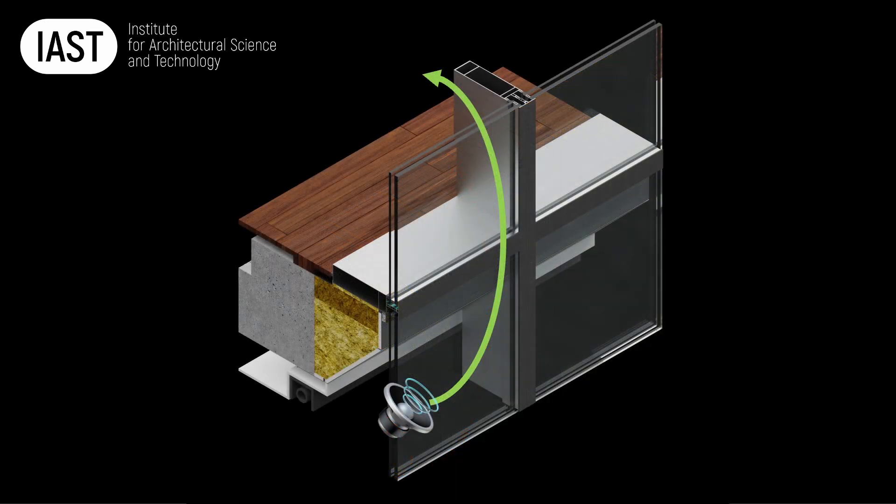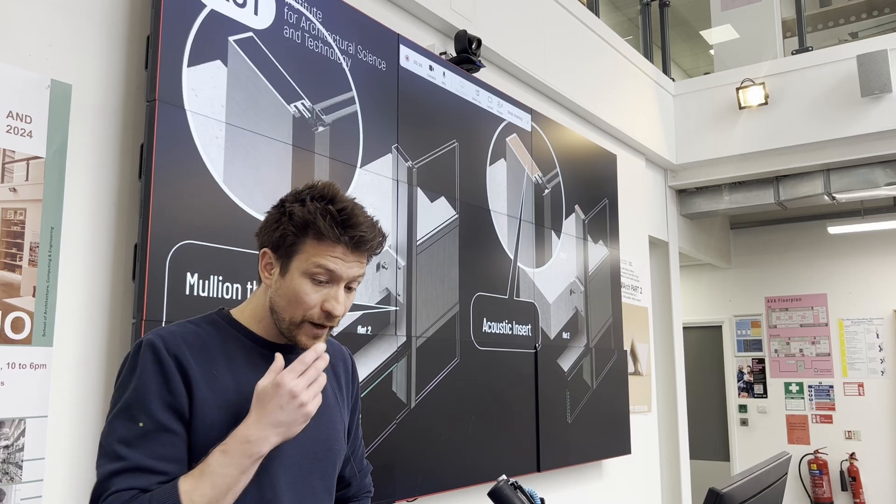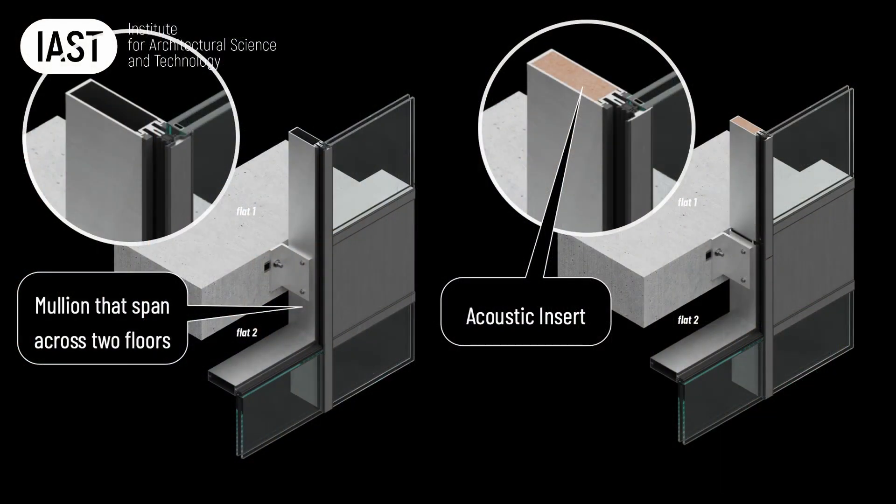There is a risk of flanking sound transmission in this configuration, especially in stick curtain wall facades. This can be managed by adding an acoustic insert within the hollow section of the mullion, which will reduce sound reverberation within the hollow section of the profile.